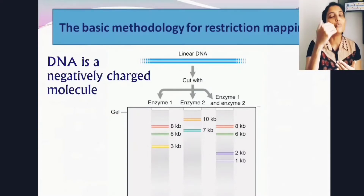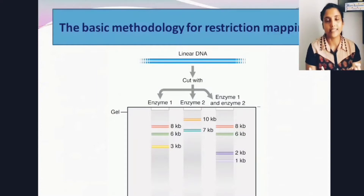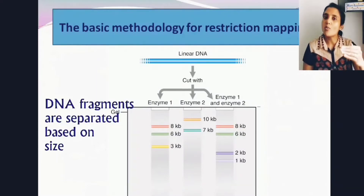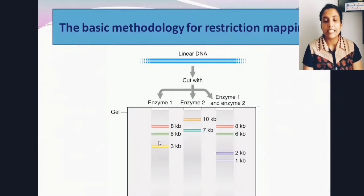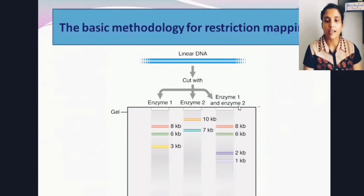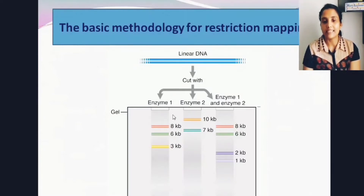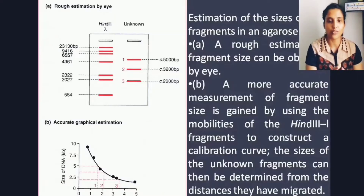First you apply one restriction enzyme and find the band pattern in gel electrophoresis, then the second enzyme, then a combination of both. In gel electrophoresis, DNA is loaded and run — being negatively charged, it moves from negative to positive. Because of the gel's pore size, DNA separates by size: smaller molecules move faster toward the positive end and larger molecules stay closer to the negative end. This creates a restriction fingerprint for the DNA sample.